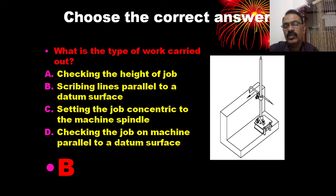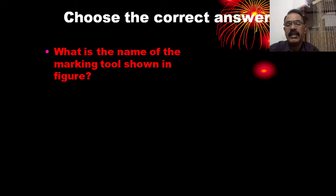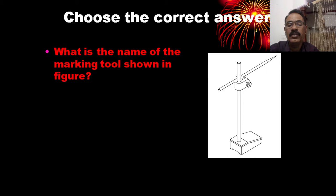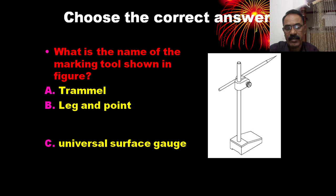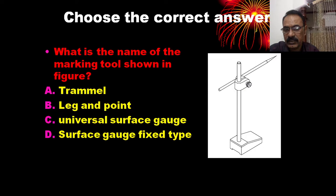What is the name of the marking tool shown? The options are: Trammel, Legend Point, Universal Surface Gauge, Surface Gauge Fixed Type. It is a fixed or solid surface gauge. The correct answer is surface gauge, fixed type.